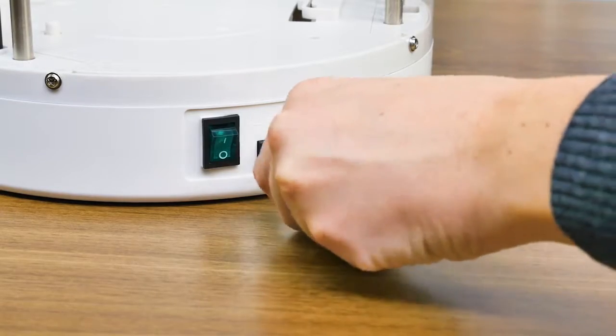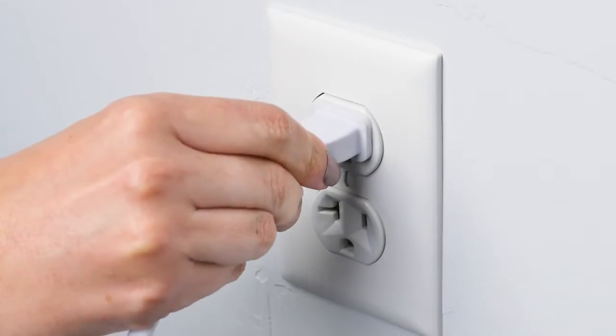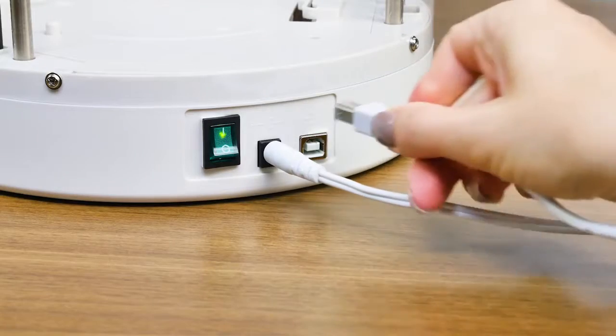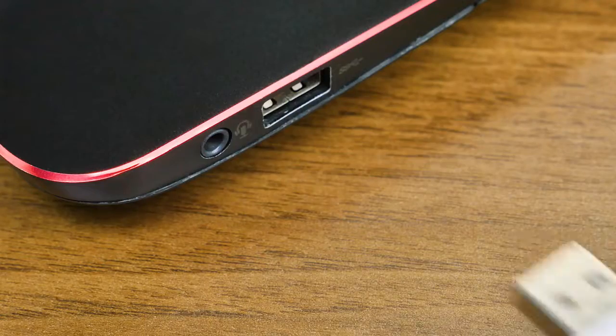Plug the included AC adapter into the right hand side of the Alta and then into a wall socket. Then connect the Alta to your computer using the provided USB cable.